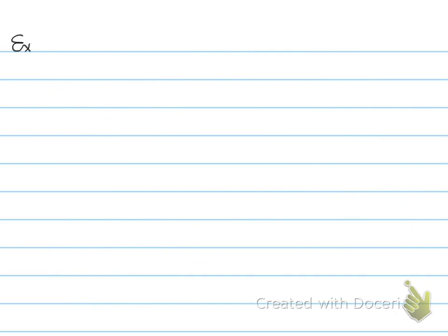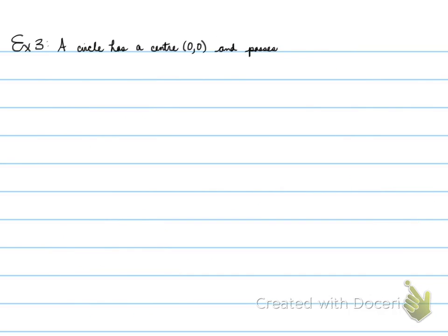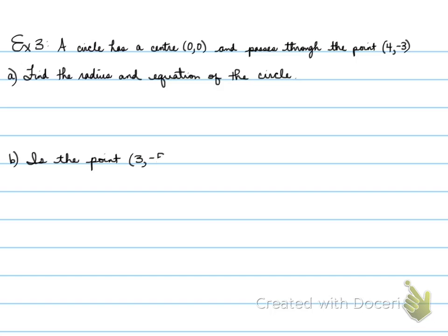Example 3. A circle has a center at 0, 0, and passes through the point 4, negative 3. You're asked to find the radius and equation of the circle. We're going to start with part A. x squared plus y squared equals r squared is our formula. We're going to substitute 4, negative 3 for x and y into the equation to find our r squared and eventually our r.